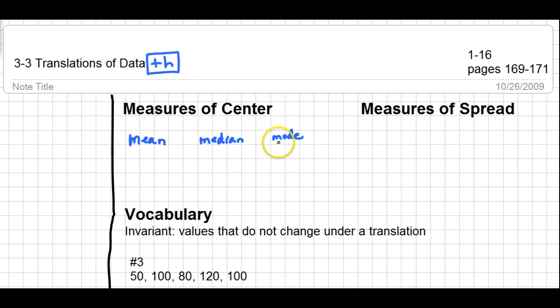The mode is the number that appears the most often or the most frequently. Keep in mind that sometimes there is no mode. Symbol-wise, on your calculator when you go to one variable statistics, you'll be able to identify the mean as being X with a bar over it.